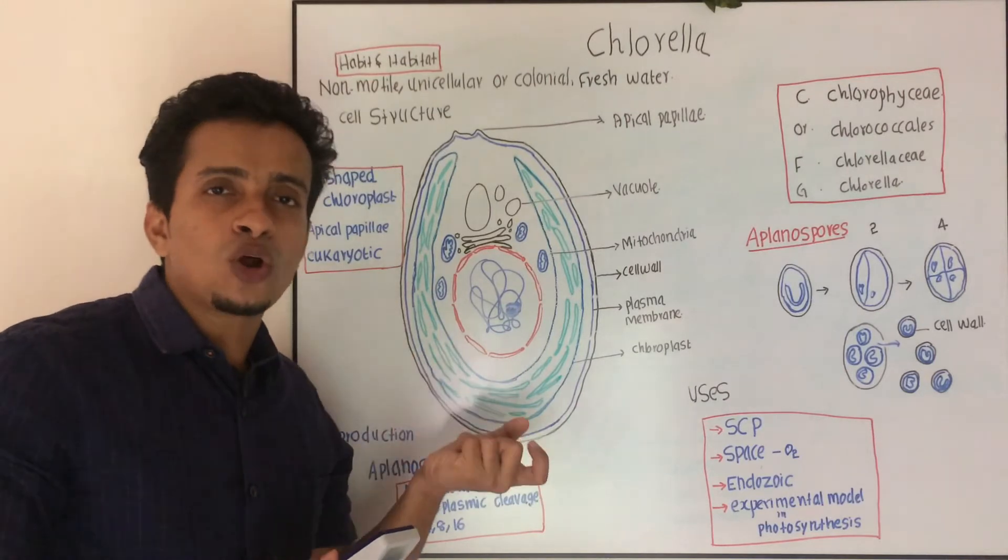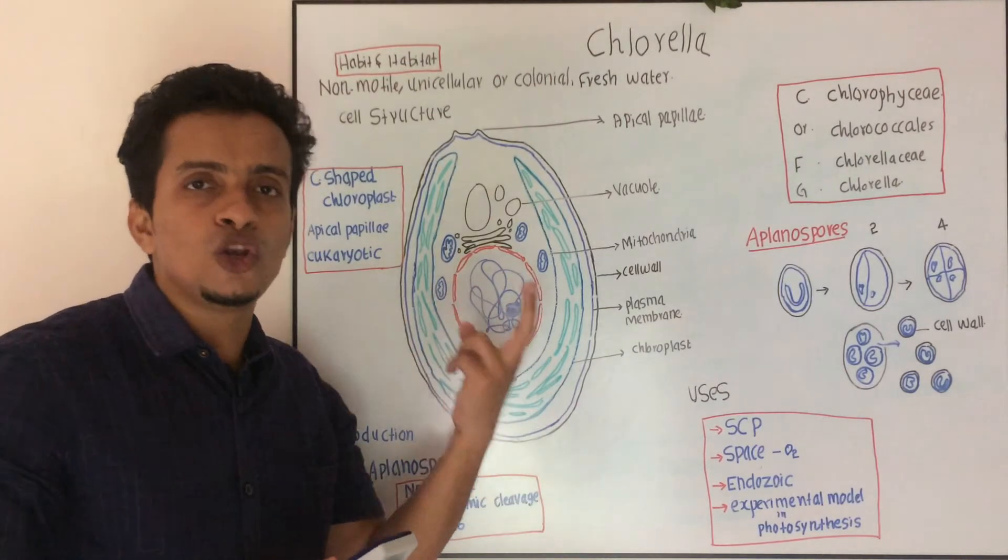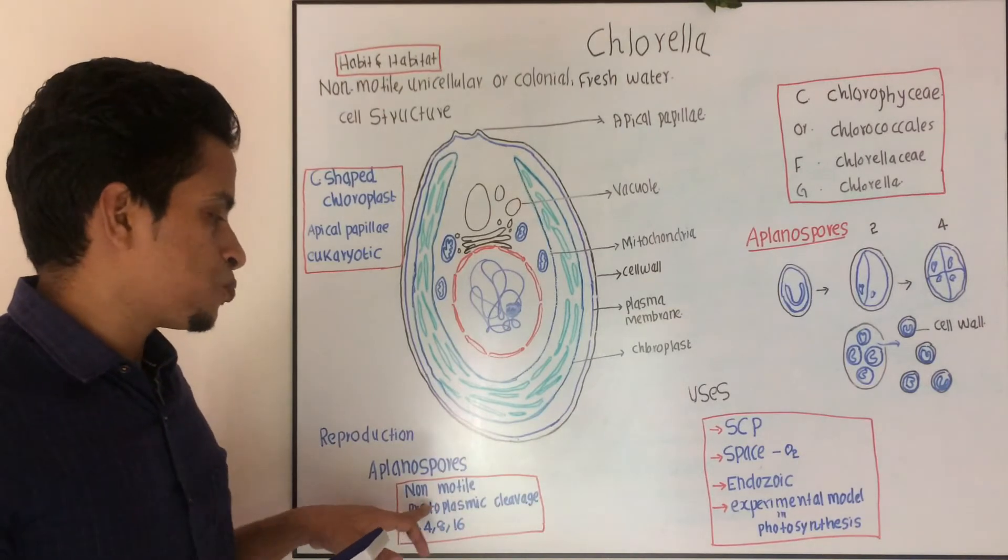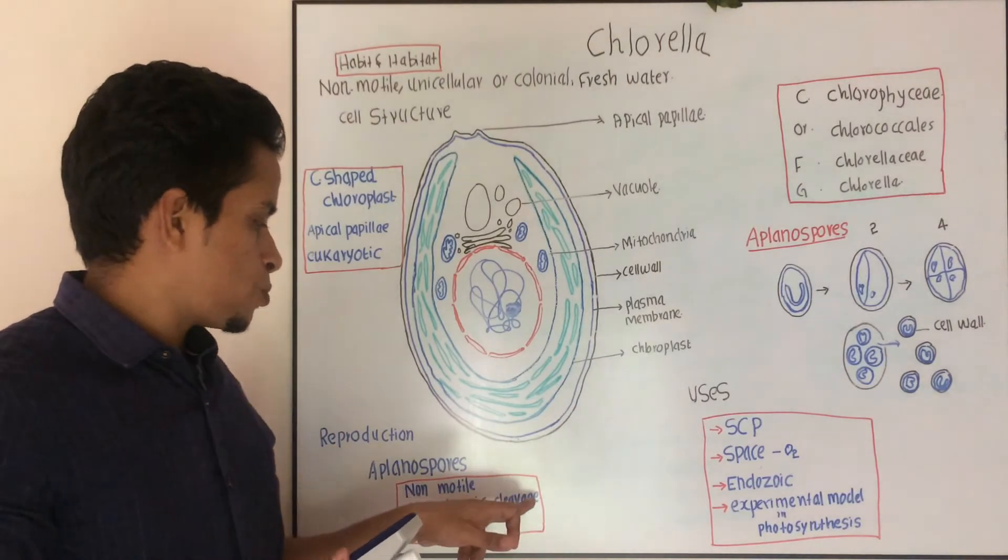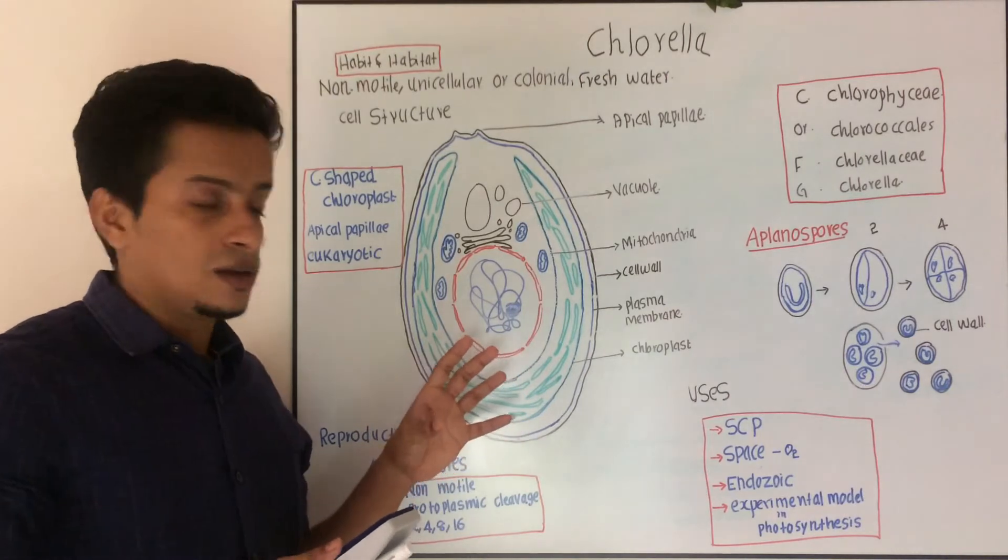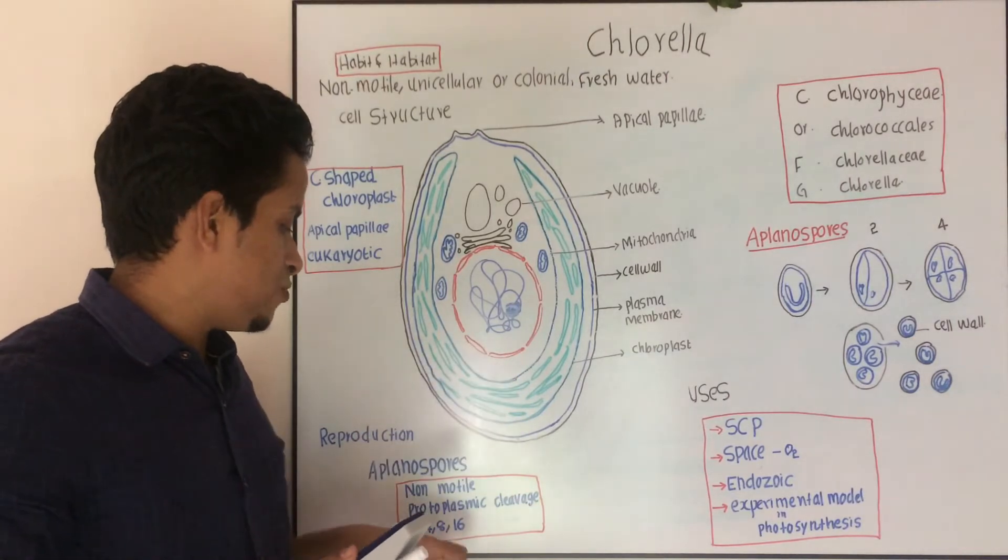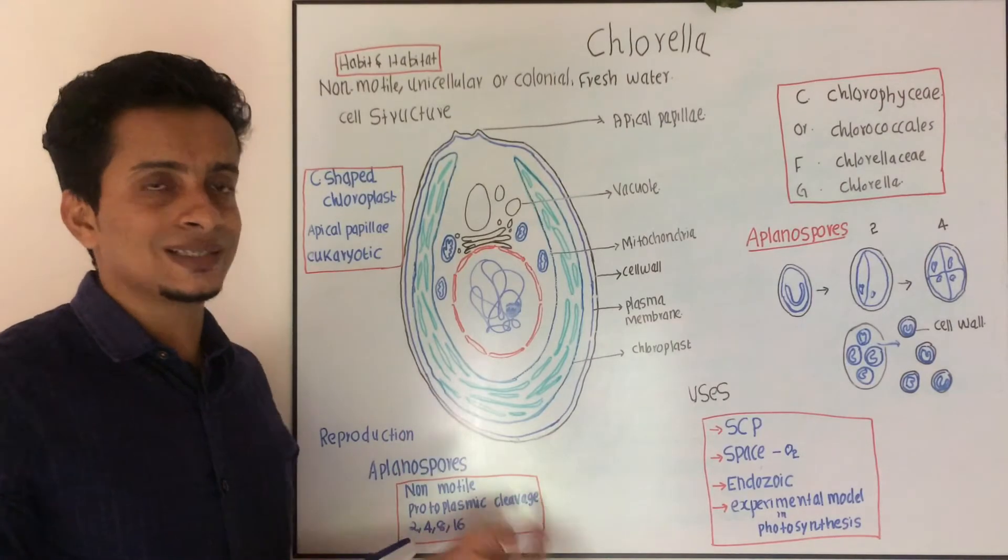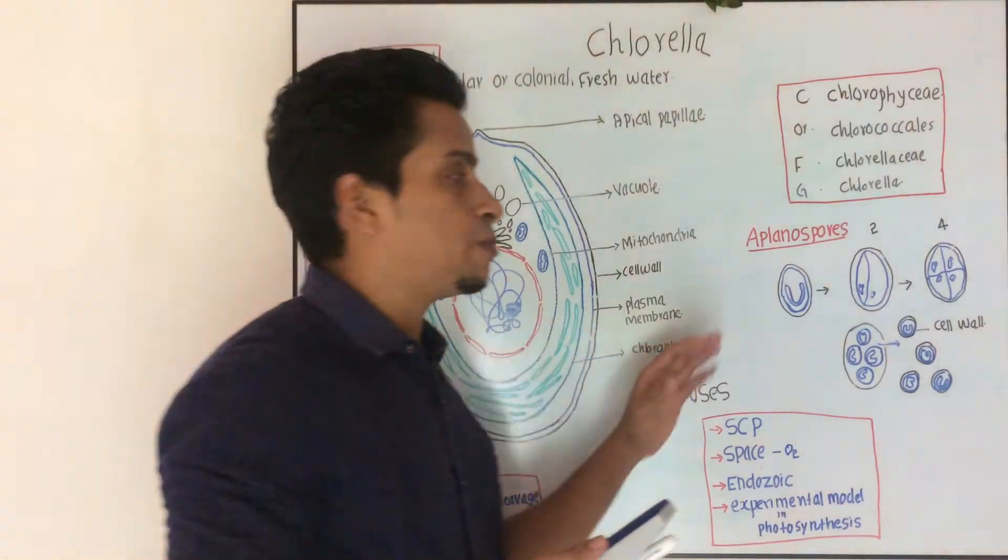So, a spore which is non-motile, non-flagellated is known as aplanospores. So, they are non-motile, protoplasmic. They produce by protoplasmic cleavage. Their number will be usually 2, 4, 8, 16. And this is a multiple formation.